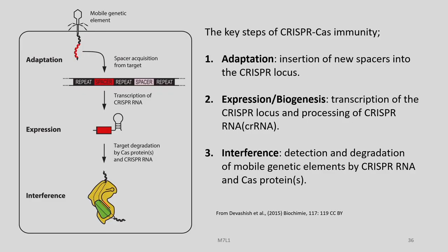What are the key steps of CRISPR-Cas9 immunity? We were discussing the Markov chain model in this regard. Let us look at exactly what happens inside the bacteria when it encounters a virus or a mobile genetic element of pathogenic nature. The key steps are: the adaptation stage, the expression and biogenesis stage, and the interference stage. In the adaptation stage, there is the insertion of new spacers into the CRISPR loci, and we have discussed how Cas1, Cas2, and CSN2 along with Cas9 in the CRISPR-Cas9 system accomplishes that.